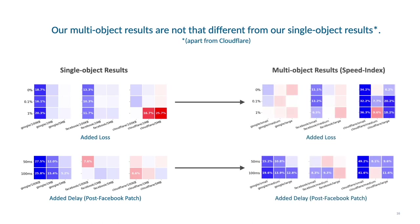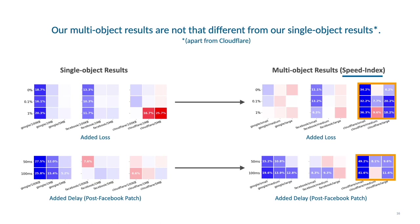Our multi-object results were simply not that different from our single object results, apart from Cloudflare. The speed index metric in our multi-object results is important here, as it measures the change in visible content over time and rewards early rendering of visual content from the browser. QUIC did not outperform TCP during 1% loss for Google and Facebook, showing how QUIC's removal of head-of-line blocking does not always lead to clear advantages. Cloudflare is an exception, but the patterns of its results imply that the QUIC protocol was not necessarily the root cause — Cloudflare sent resources in a different order with HTTP/2 than with HTTP/3, so their results were mainly caused by differences in application configuration rather than differences between QUIC and TCP.